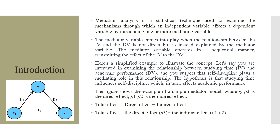The mediator variable operates in a sequential manner, transmitting the effect of the independent variable to the dependent variable. For example, you are interested in examining the relationship between studying time (the independent variable) and academic performance (the DV), and you suspect that self-discipline plays a mediating role. The hypothesis is that studying time influences self-discipline, which in turn affects academic performance. So the total effect equals direct effect p3 plus indirect effect p1 multiplied by p2.